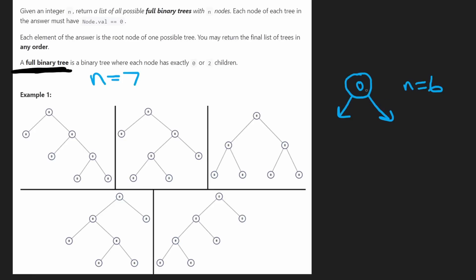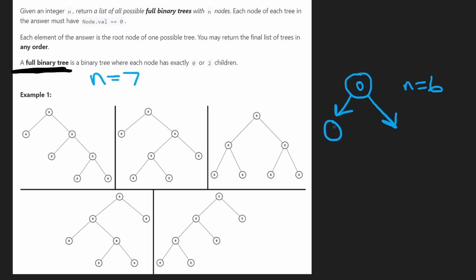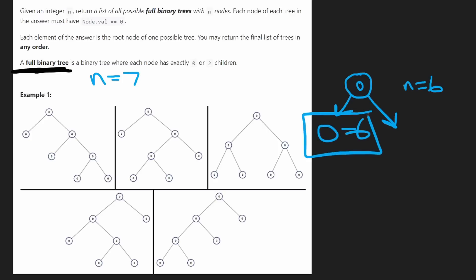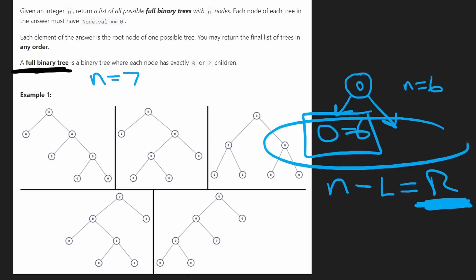So we are still going to just brute force it — don't try to be smart, just try to figure out how you can solve it at all. To brute force, we go through every combination: zero nodes on the left and six on the right, or one on the left and five on the right, or two on the left and four on the right, and so on. Basically every combination from zero through n minus one nodes on the left. Then to calculate nodes on the right is just N minus L, where L is the number on the left.